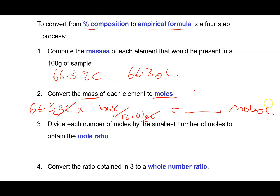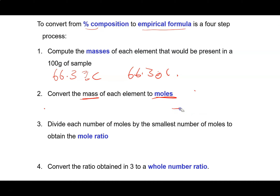In a compound you'll have percent carbon, percent hydrogen, percent oxygen, percent chlorine, whatever — so you'll have a whole bunch of moles depending on the number of elements. What you're going to do is take each of those molar values and divide by the smallest one in that set. Then one of them will become 1 — the smallest one — and everything else will be a multiple of that, so you'll end up with something like 1 to x to y.